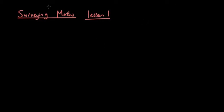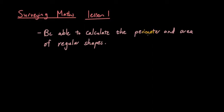Let's start by talking about the first concept that you need to learn for surveying. The first thing you need to be able to do is calculate the perimeter and area of regular shapes. So what are some regular shapes? Well, the most basic shape would be a triangle. Because if you think about it, just about every shape can be broken up into small triangles.